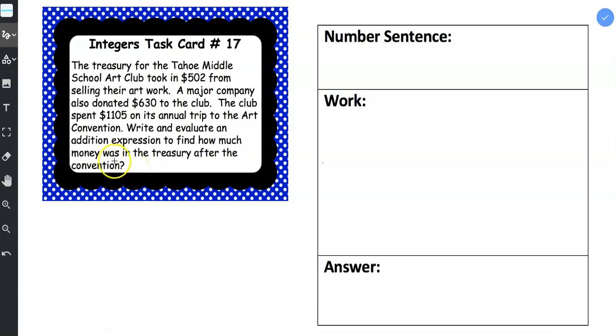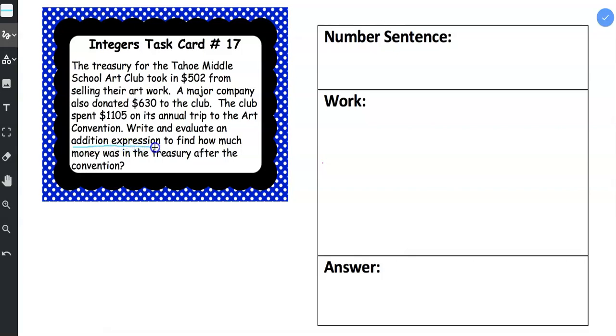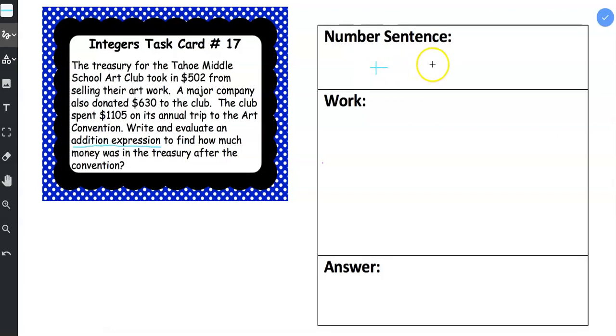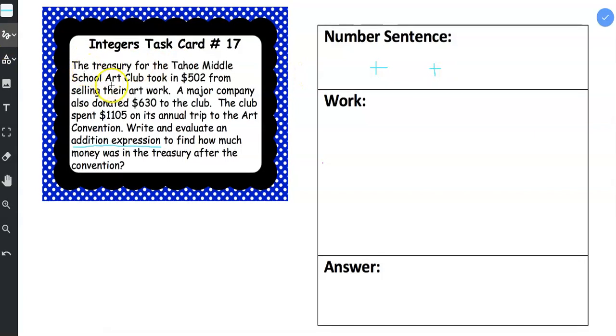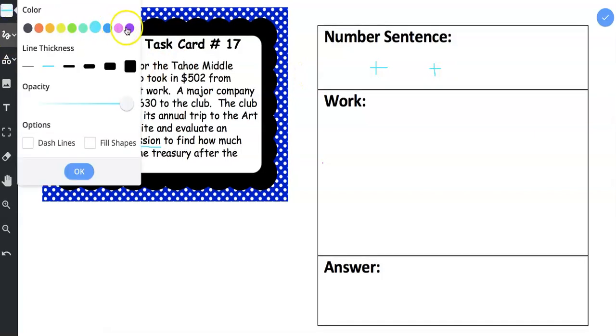So what's interesting about this one is we are supposed to write an addition expression. So what we need to do is in between each number, we need to write an addition symbol. So let's go ahead and look at the first number that's listed and I'm going to switch colors as well.